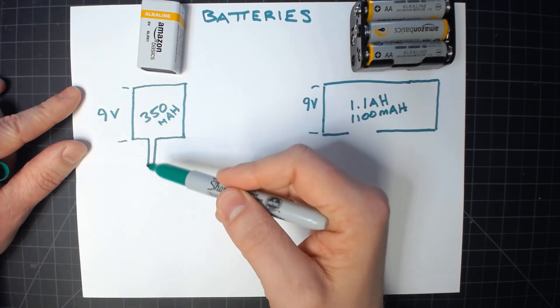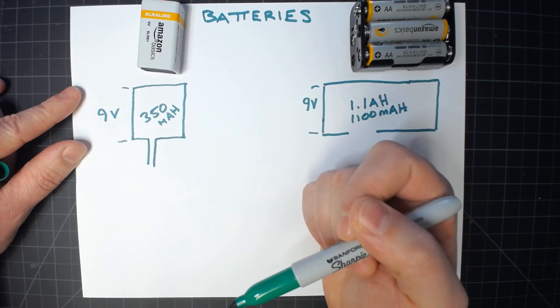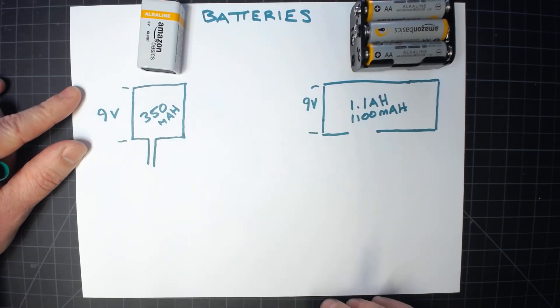And current is basically the rate at which the energy is able to transfer, the rate of flow of the charge.